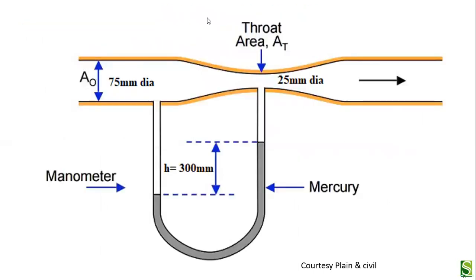This is the diagram of the venturi meter. It consists of two tapering sections connected at the throat area. This is upstream and this is downstream as the fluid moves from one end to the other. As the area upstream is larger, the fluid has lower velocity. As it moves into the throat area, the area decreases and velocity increases. One part of the manometer is connected to the upstream and another part is connected at the throat area.